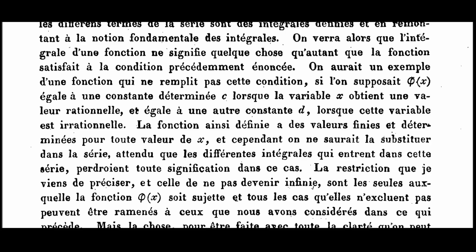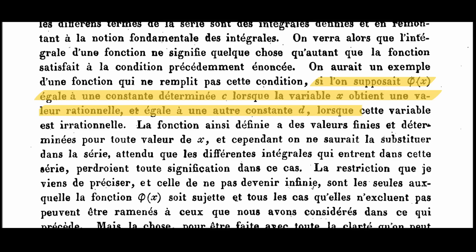But Dirichlet found one. He says consider a function phi of x that's equal to a constant c when x is rational and a different constant d when x is irrational. Usually we say c is equal to 1 and d is equal to 0.